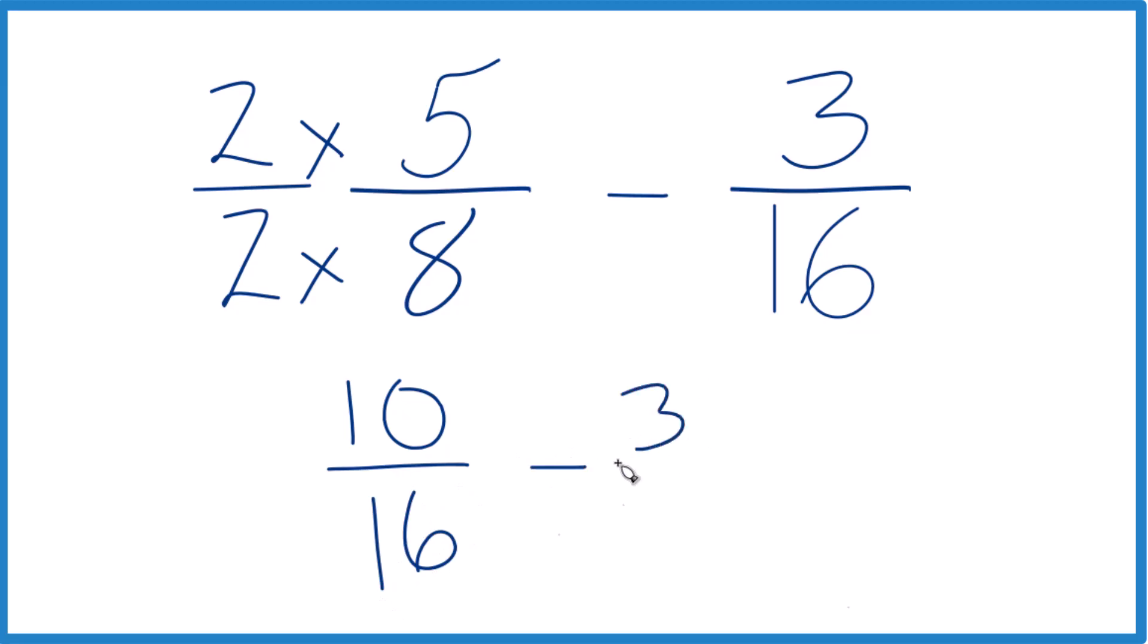Subtract 3 sixteenths there, same denominator. So 10 minus 3 is 7, and then you keep the denominator the same, 7 sixteenths.